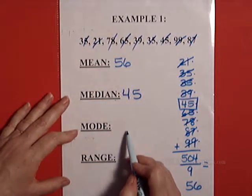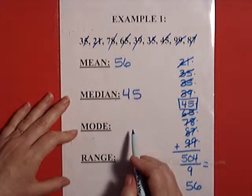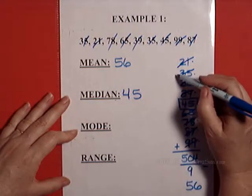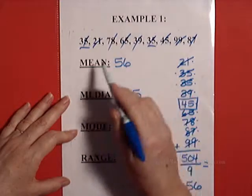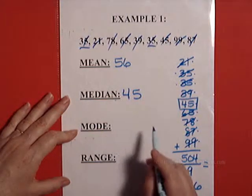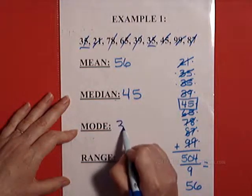The mode is the one that occurs most often, and there's only one number that repeats itself, and that is 35. Okay, you see that twice and no other number repeats itself. So the mode for these numbers is 35.